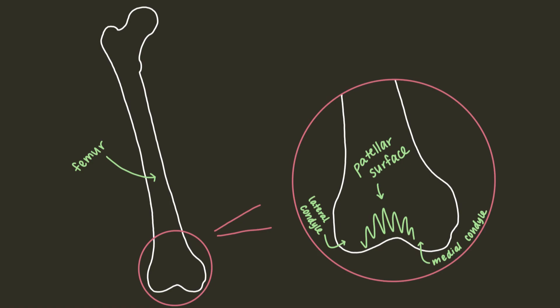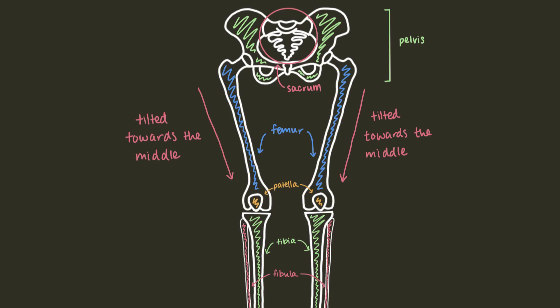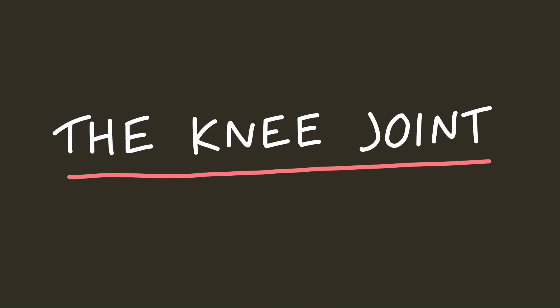Between the two condyles is a smooth patellar surface, on top of which sits the patella, or the kneecap. Now that we understand all the bones involved, we can look at the various ligaments and cartilages that make up the knee joint. The knee joint is kind of a misnomer, as there are actually three joints,